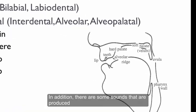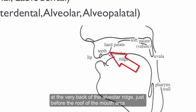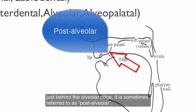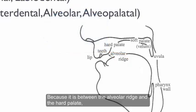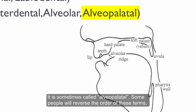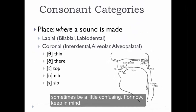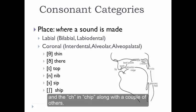There are also some sounds produced with contact between the front of the tongue and the small area at the back of the alveolar ridge, just before the roof of the mouth arcs high up toward the hard palate. Because this place of articulation is just behind the alveolar ridge, it's sometimes referred to as post-alveolar. Because it's between the alveolar ridge and the hard palate, it's sometimes called alveopalatal, or palatoalveolar. The sounds produced at this place of articulation include the sh in ship and the ch in chip, along with a couple of others.